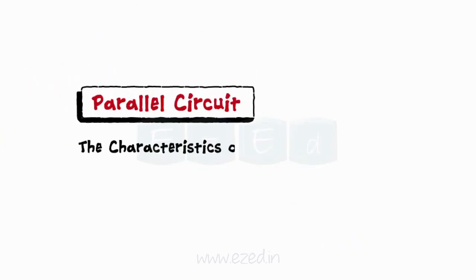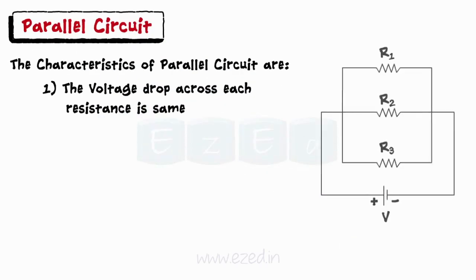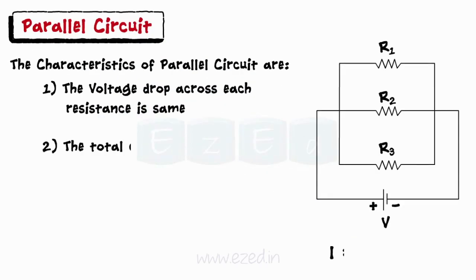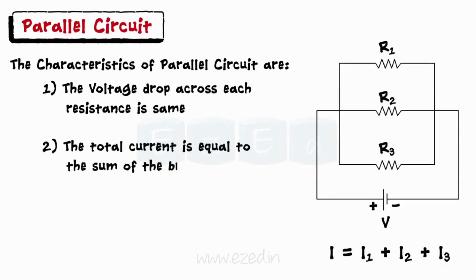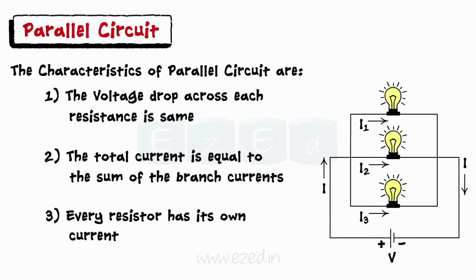The characteristics of a parallel circuit are: the voltage drop across each resistance is the same; the total current equals the sum of branch currents; and every resistor has its own current. Thus, even if any bulb goes off, only that branch becomes inactive but the remaining branches continue to conduct current.